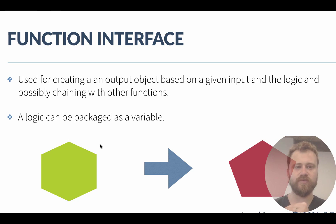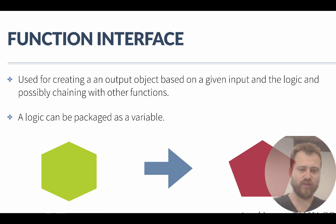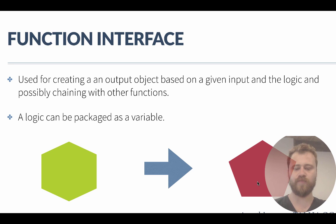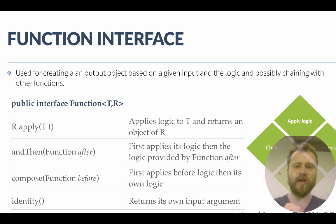Let's talk about the Function interface. The Function interface is used for creating an output object based on a given input and some logic. You get a single object, apply some logic to it without changing that object, and output a brand new object. The important point is that you don't change the input — you only read values from it and return a totally different object.